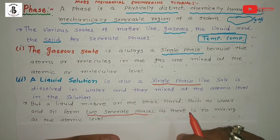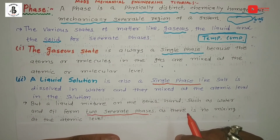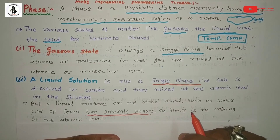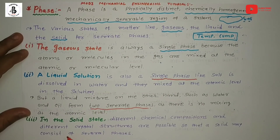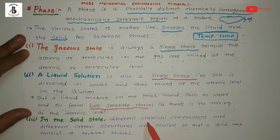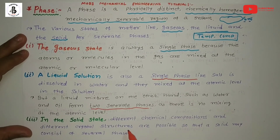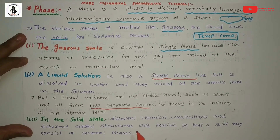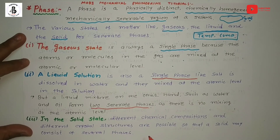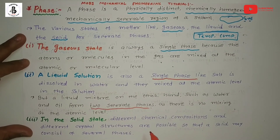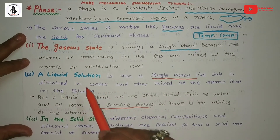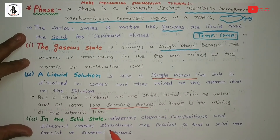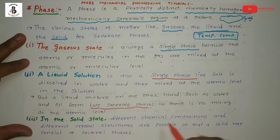How both metals or components mix together is represented by the Hume-Rothery rules — a link is provided in the description box. In the solid state, different chemical compositions and different crystal structures are possible, so a solid may consist of several phases depending on the solubility of both materials at room temperature. According to the set of conditions of temperature and composition, several phases form at room temperature as well as at higher temperatures — whether gaseous, liquid solution, or solid state — depending on temperature and weight percentage of composition of the alloying elements.